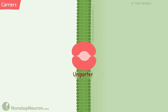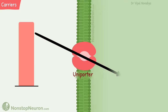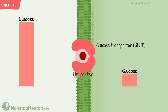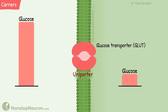Uniporters move a single type of substance down its electrochemical gradient. For example, glucose transporters move glucose down the concentration gradient. Another example of uniporters is urea transporters.